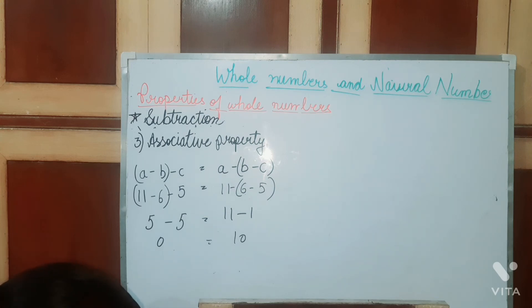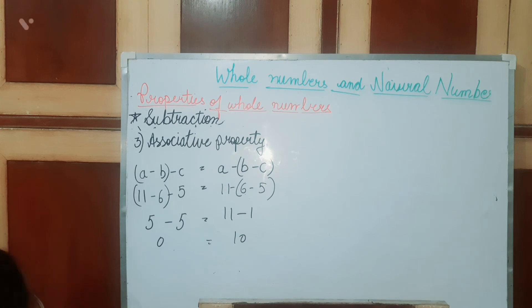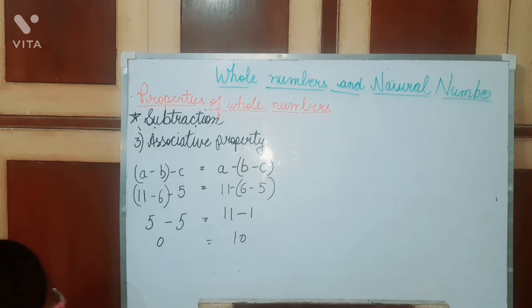We can't say that this property holds for subtraction. Associative property does not hold for subtraction.